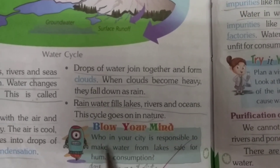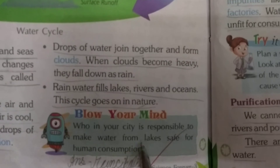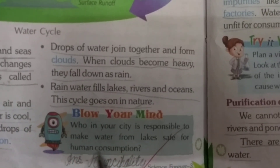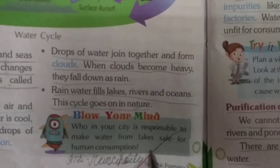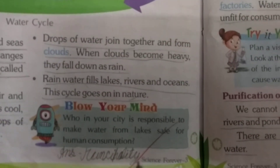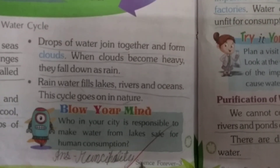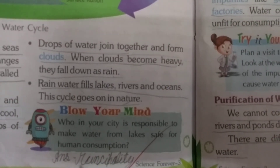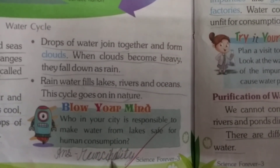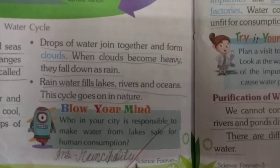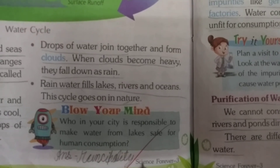Blow your mind. Who in your city is responsible to make water from lakes safe for human consumption? Municipality. Write down municipality: M-U-N-I-C-I-P-A-L-I-T-Y. Municipality. Revise for 5 minutes.